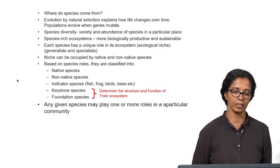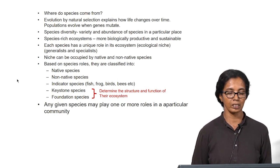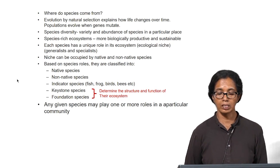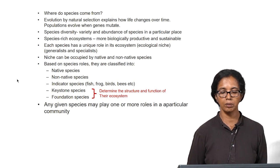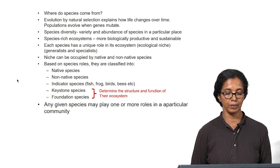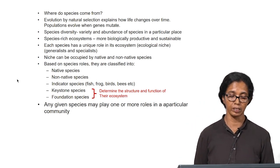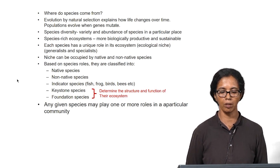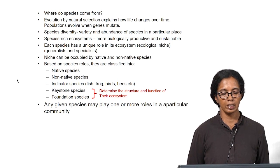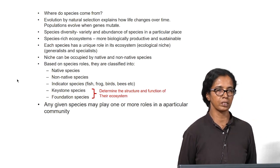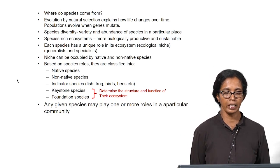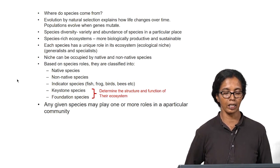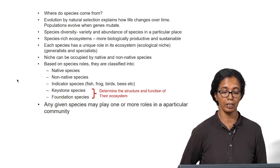Species-rich ecosystems are important because they are more biologically productive and more stable under circumstances such as disturbance, chemical pollution, storms, floods, or drought. Each species has a unique role in its ecosystem known as its ecological niche — there are generalist and specialist species, but each species' role in its ecosystem cannot be underestimated or disregarded.